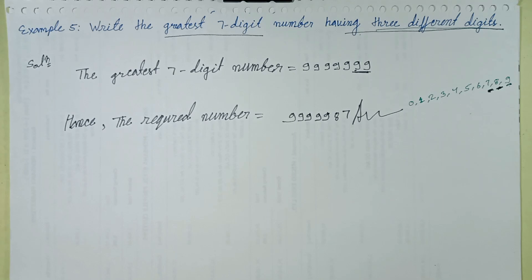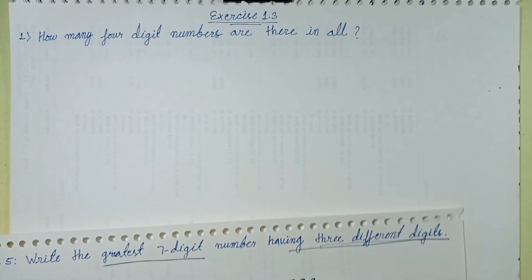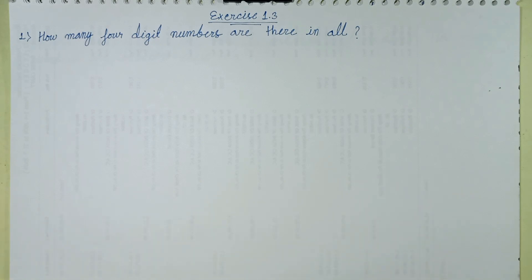The required seven digit number is solved. In the next episode, we will solve exercise 1.3 question number one: how many four digit numbers are there in all? See you in the next episode.